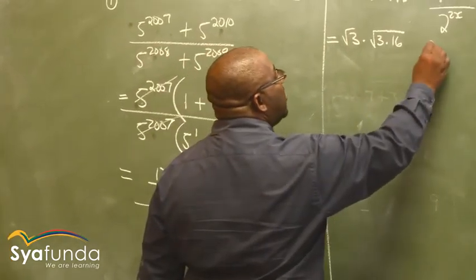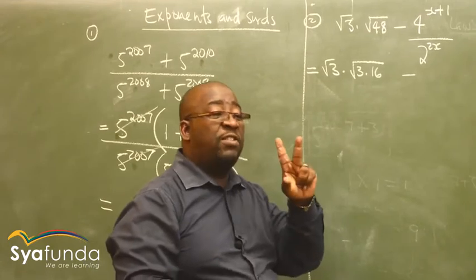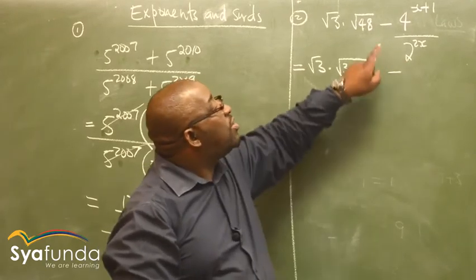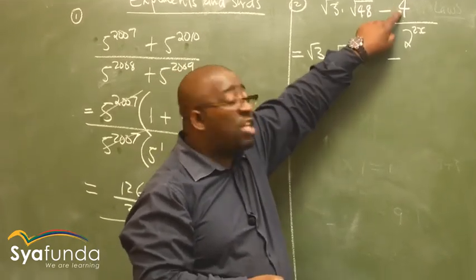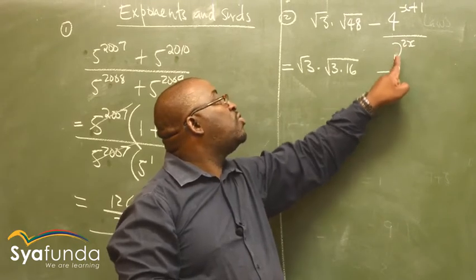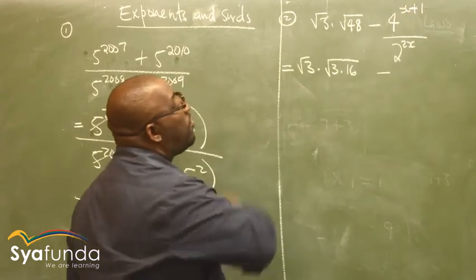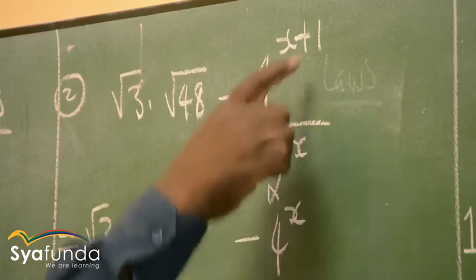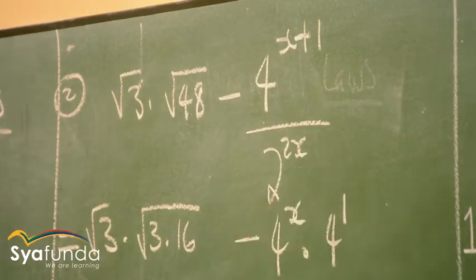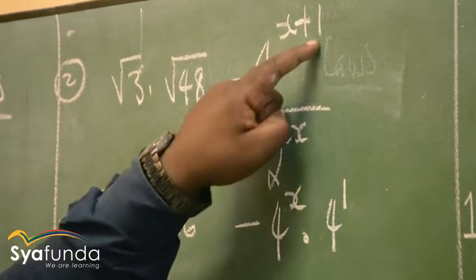Now let's move on to the exponents part. Your eyes are very important. I've got 4 and I've got 2 here — I must make them have the same base. I can change the base to 4, or change that base to 2. I'm spoilt for choice. I can change this to 4, because 4 is 2 to the power of 2. What is 2 squared? It is 4. Or I can make this 2 squared and put it in brackets. I'll go for 4. If I've got 4 to the power of x plus 1, before it was 4 to the power of x times 4 to the power of 1. Then we added these exponents to get x plus 1, because if you multiply powers with the same base, you add the exponents.